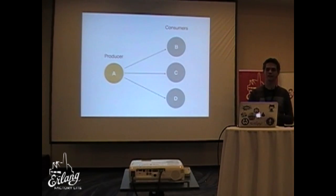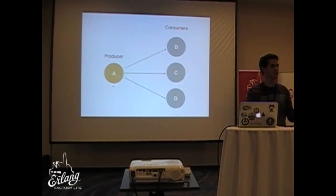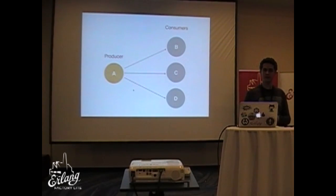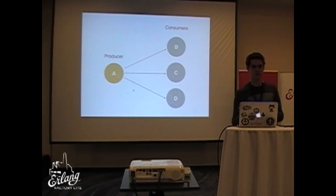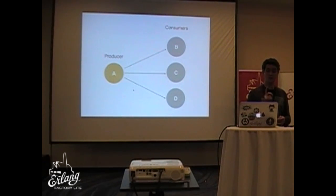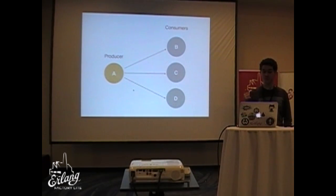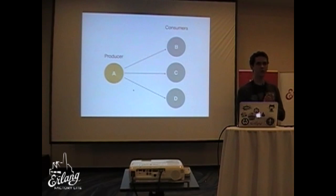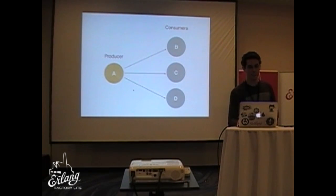In real life: with the partition dispatcher you have a partition key and based on that key you route to B, C, or D. With the broadcast dispatcher, instead of choosing one consumer you send to all of them. An important thing about the broadcast dispatcher is it regulates consumers with different speeds — if B is super fast and C is slower, B will wait until C finishes its batch before getting the new batch together. The demand dispatcher is like: the first one who demands more gets more.